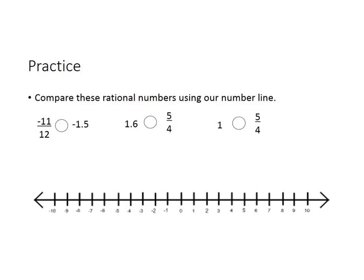Now let's compare more rational numbers using our number line. We have a mixture of fractions and decimals, so first we need to change them to the same format. Looking at negative 11 twelfths and negative 1 and a half, we could change the fraction to a decimal, but we could also easily change negative 1 and a half to a fraction. In this case, the same format would be easiest as fractions. Negative 11 twelfths is going to be smaller in absolute value than negative 1 and a half. Negative 1 and a half is farther to the left, so since they're both negative, negative 11 twelfths is going to be greater.